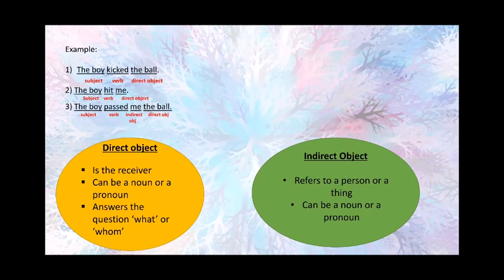The boy kicked the ball. In this sentence, you can see the underlined words. The boy is the subject. Kicked is the verb. Just beside it, we have the ball. What did the boy kick? The boy kicked the ball. So the ball is an object — a direct object. Why is it a direct object? Because the action is being transferred; it is affected by the subject's action. That is why this is a direct object.